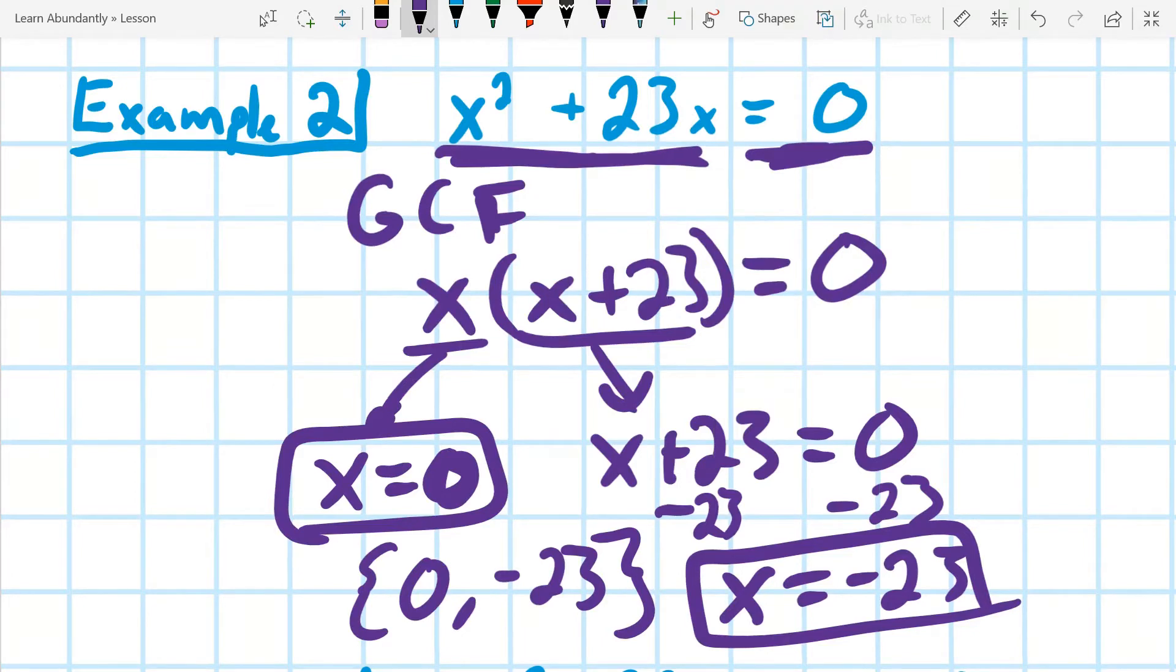So it's actually easier when there's just a factor that is a monomial, because it's usually going to just be equal to zero.